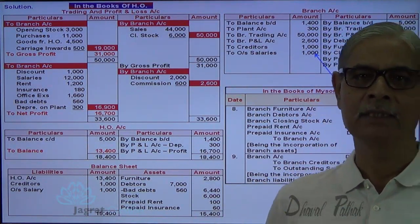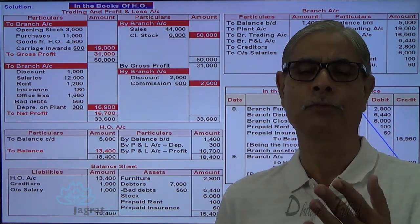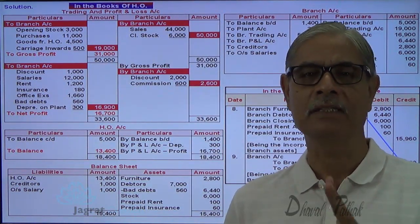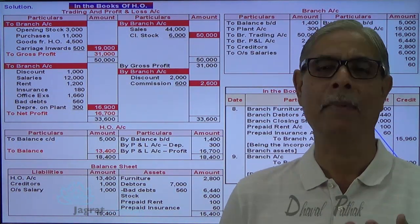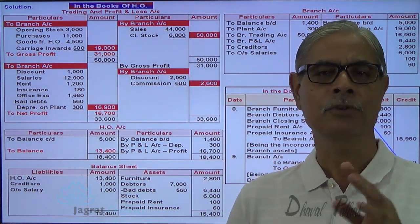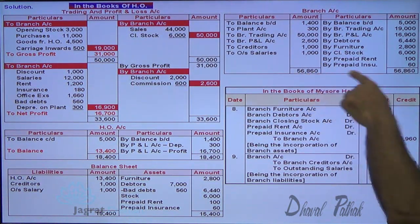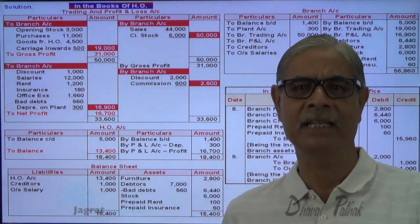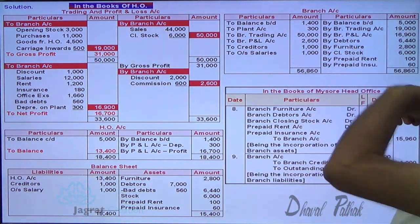At the end of the year, the branch has no separate existence from the head office. HO cannot record 'amount due from branch' or 'amount payable to branch' because the legal existence of the branch and HO is unified. The total of the branch account on both debit and credit sides must agree — here both sides total 56,860. This confirms that nothing is recoverable from or payable to the branch.